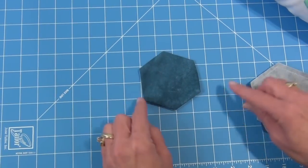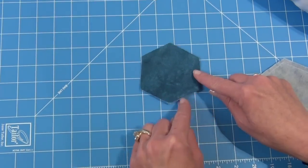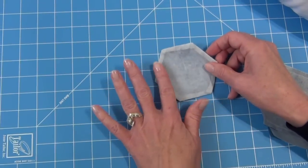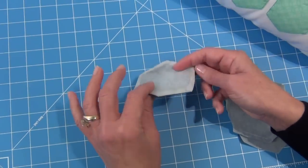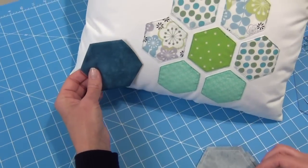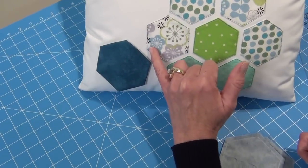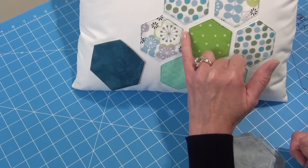Flip it over and make a slit in the back of the interfacing and turn right sides out. That will look like this. Make sure to expose all your points, that's how it will look from the front. And from the back, you'll have your interfacing ready to go. You can then take your finished hexagon, apply it to your project, and press it in place. You can leave as is, or finish with a decorative stitch like we've done here.